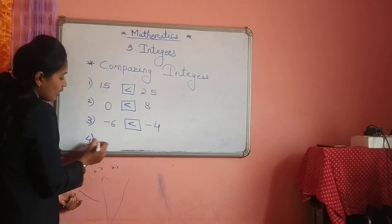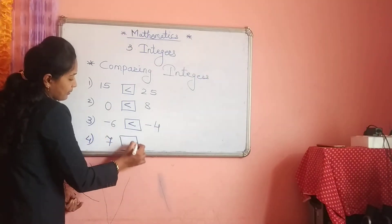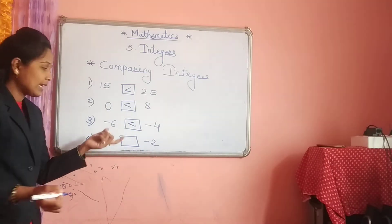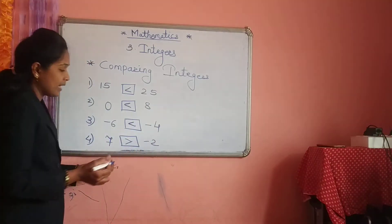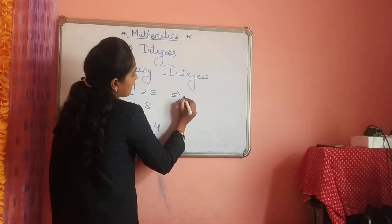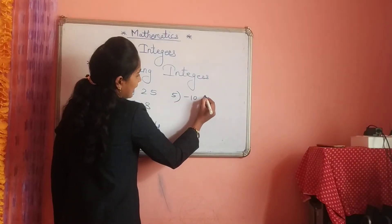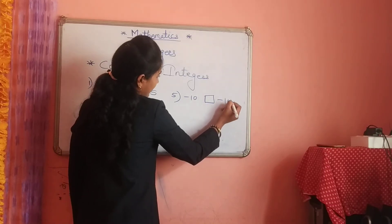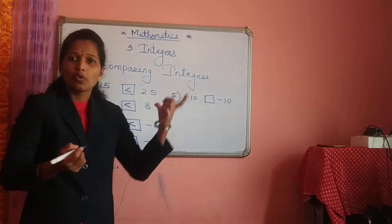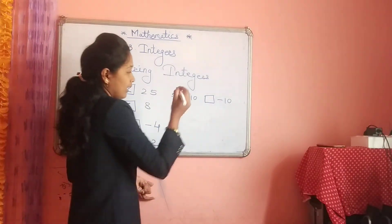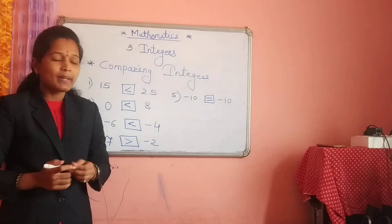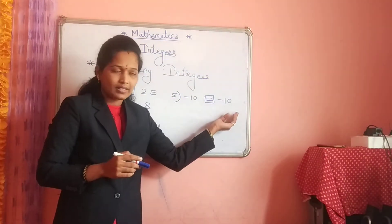One more case: one number positive and another negative — always remember, the positive number is always bigger than the negative number. And the fifth example: minus 10 and minus 10 — both numbers are negative and also the same. In this situation, we have to give the equals-to sign. So minus 10 equals minus 10.